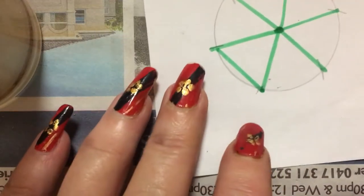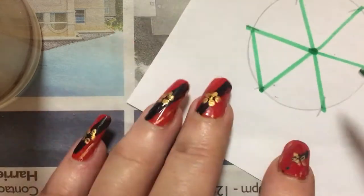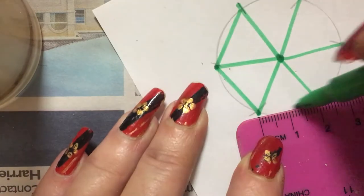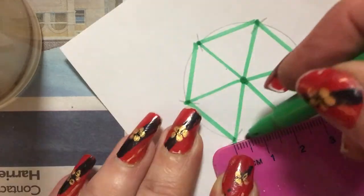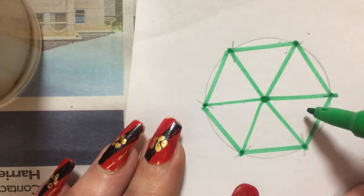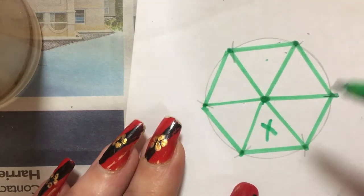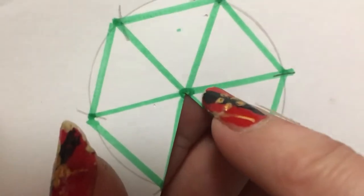So then you're going to draw a line from each point across. You need to have five, so what you're going to do is you're going to cut this one out.